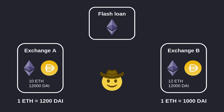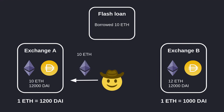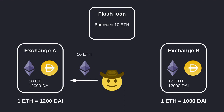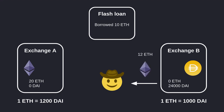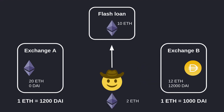Let's see how it's done using a flash loan. First I get a flash loan and borrow 10 ETH. I take this 10 ETH over to exchange A and buy DAI. I take this DAI over to exchange B and buy back ETH. I borrowed 10 ETH and got back 12 ETH — I repay the 10 ETH I borrowed and my profit is 2 ETH. That is basically how arbitrage works using a flash loan.